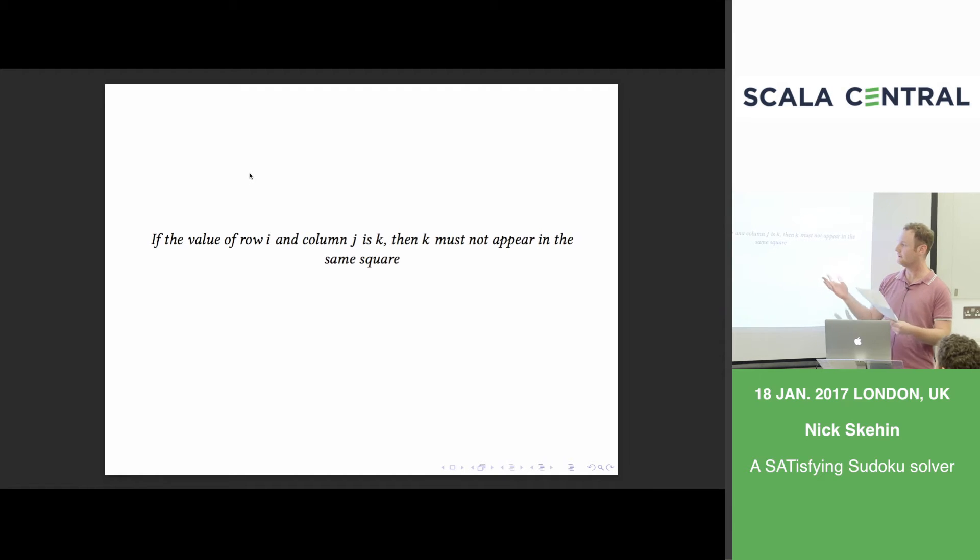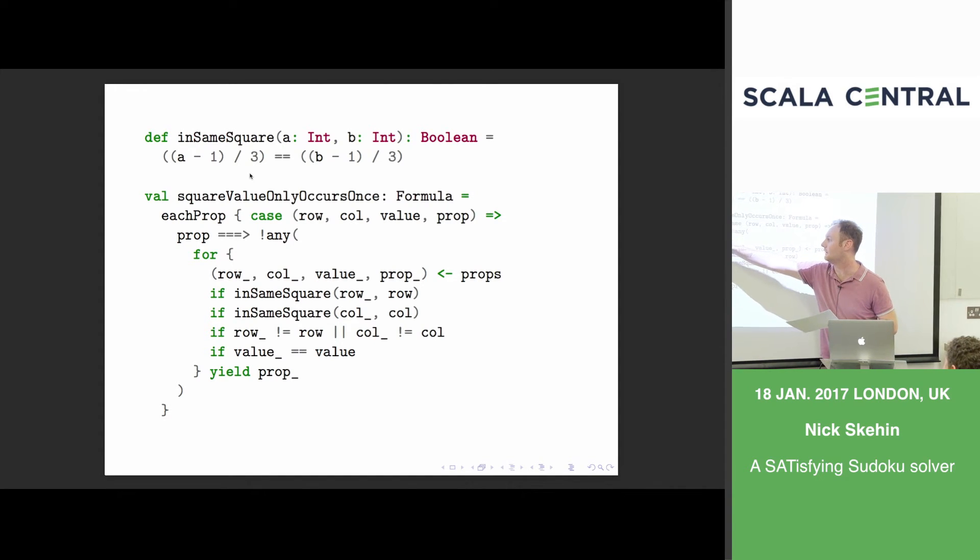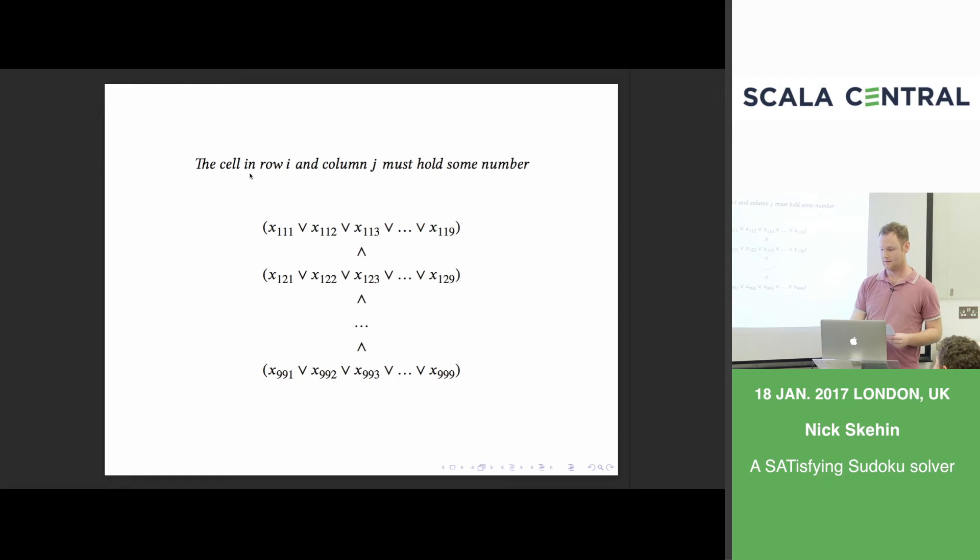And also we can write the same thing for columns. So this one looks really very similar. We just flip the constraint here and that works. And then we have the final constraint which is that they must not appear in the same square. This also has a quite similar form. So we just define this helper here. This takes A and B and this is either across the square or down the square. It just tells you whether for a given pair of rows or columns, whether they're in the same three by three square. And then here the constraint is just that they have to be in the same square. If the proposition is true, then none of the other propositions for that value can be true.